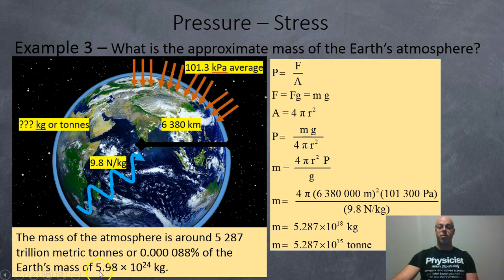Now, if you look up the mass of the Earth, which is 5.98 times 10 to the 24, if we divide the 5.287 times 10 to the 18 by the 5.98 times 10 to the 24, the Earth's atmosphere is approximately 0.000088% of the Earth's mass. And that's it.